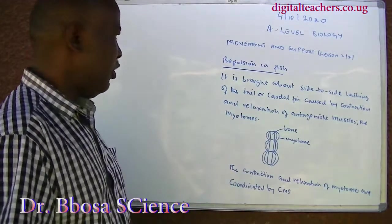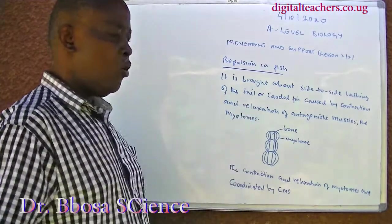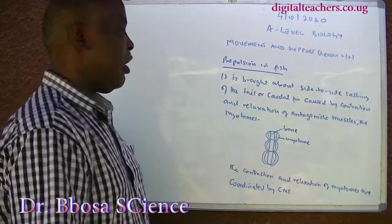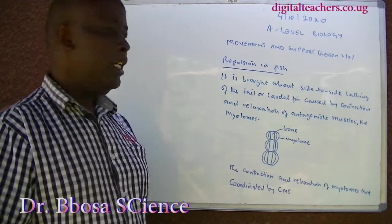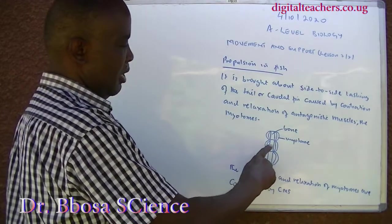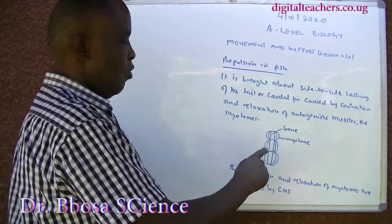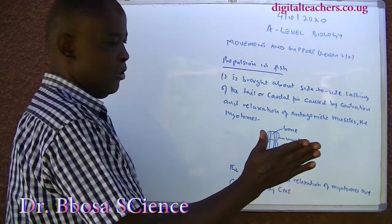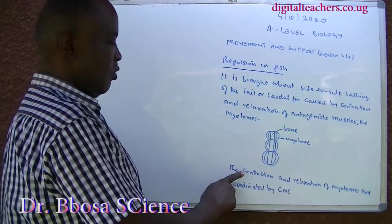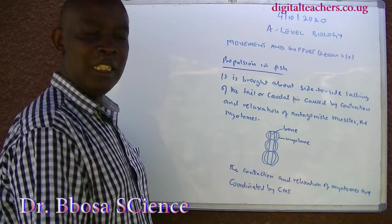Propulsion in fish is brought about by side-to-side movement of the tail or caudal fin, caused by contraction and relaxation of antagonistic muscles called myotomes. The myotomes on one side are antagonistic to the myotomes on the other side — when one side contracts, the other relaxes, producing the side-to-side motion. The contraction and relaxation of myotomes are coordinated by the central nervous system.